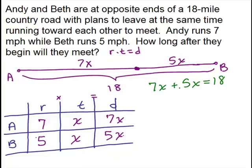That was pretty simple to solve. We've got like terms, so we have 12x is 18. And then we can divide both sides by 12, solve for x.